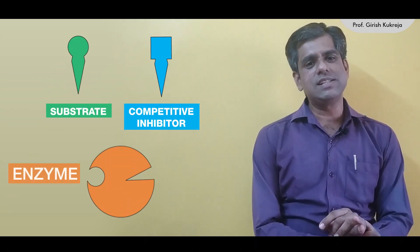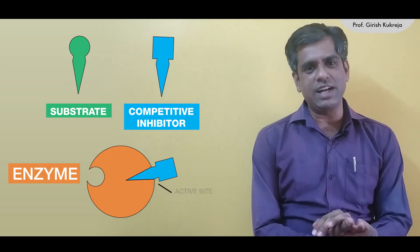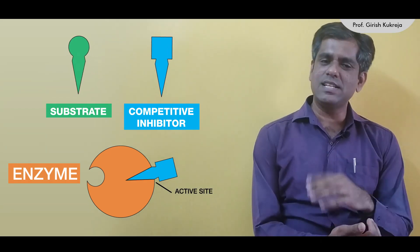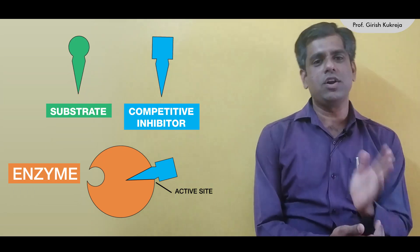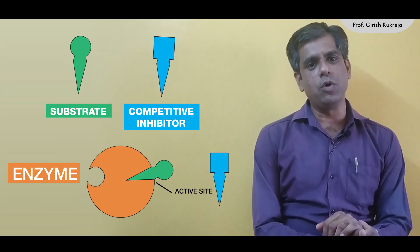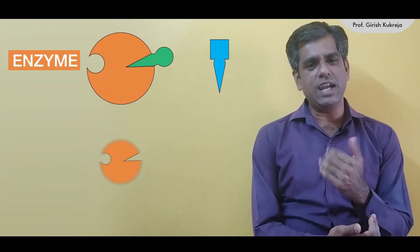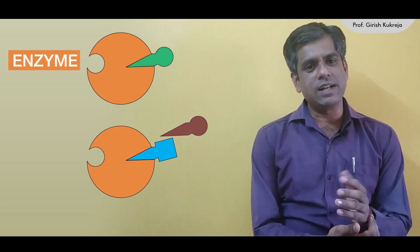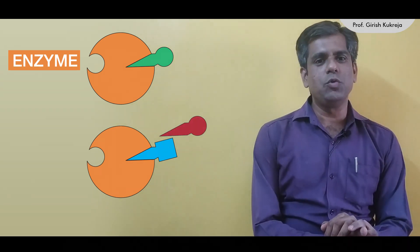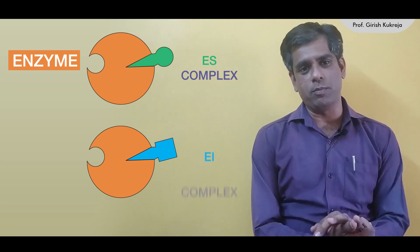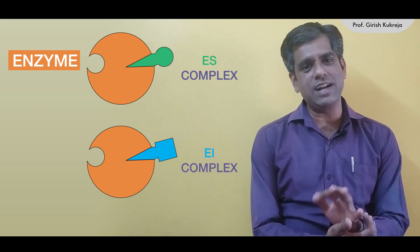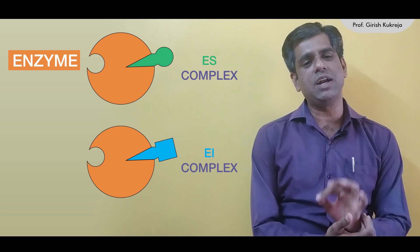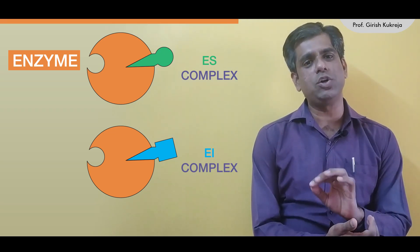Therefore, the inhibitor binds at the active site of the enzyme. The enzyme at any given time can bind either the substrate or the inhibitor — if the substrate is bound, the inhibitor is not, and vice versa. So you either encounter an ES or an EI complex; you will never encounter an ESI complex. A competitive inhibitor binds only to the free enzyme.